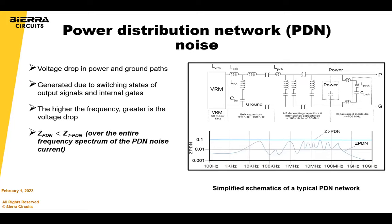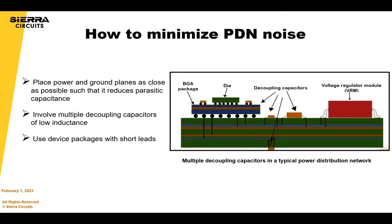For PDN: when devices output signals and internal gates switch states, currents through power and ground planes change, causing a voltage drop — this is referred to as PDN noise. Quick signal transition times cause higher numbers of lines to switch states, leading to voltage decreases across power and ground rails. To reduce PDN noise, the impedance of a power system should be as low as possible. Place power and ground planes close together to reduce parasitic capacitance. Use multiple low-inductance decoupling capacitors across power and ground rails placed close to the power and ground pins. Use device packages with short leads.